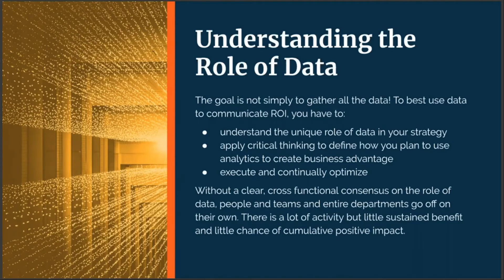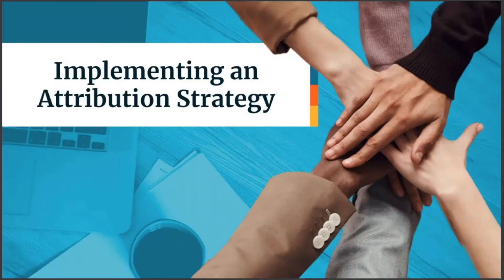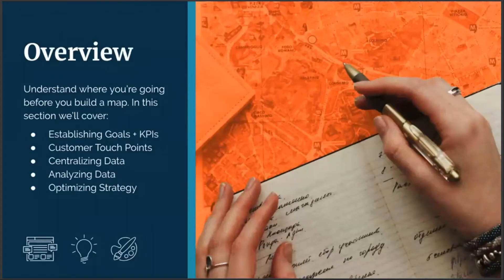That covers the right mindset portion. Vicki is going to take it away on implementing an attribution strategy. Now that we understand the importance of attribution and a data-driven approach to proving marketing ROI, let's dive into execution. Implementing an attribution strategy can be broken down into a few key steps: establishing goals and KPIs, mapping out customer touchpoints, centralizing your data, analyzing that data, and optimizing your strategy.